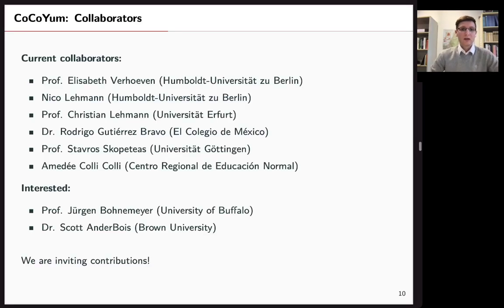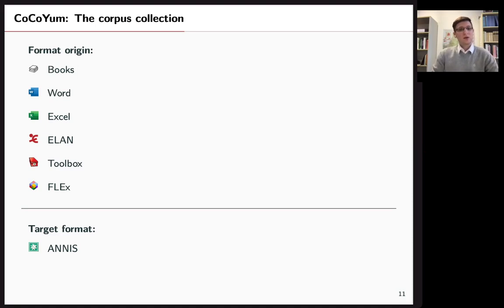So with CoCoYum, the collection is consisting of data from lots of researchers, collaborators already and some more interested. And if you have contributions yourself, get in contact. We would really like to increase the Yucatec Mayan corpus more and more. So what we get from researchers or collected ourselves are many different formats. We have books, excel files, ELAN, toolbox and so on. And our target format will be ANNIS, where we can search and visualize. We will see that in a minute.